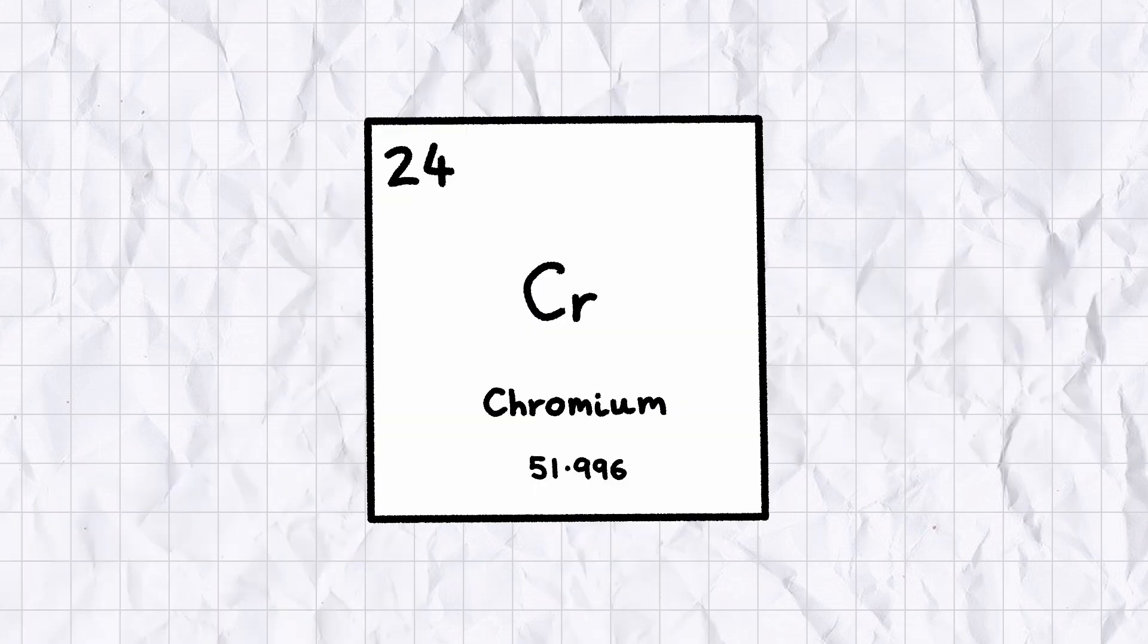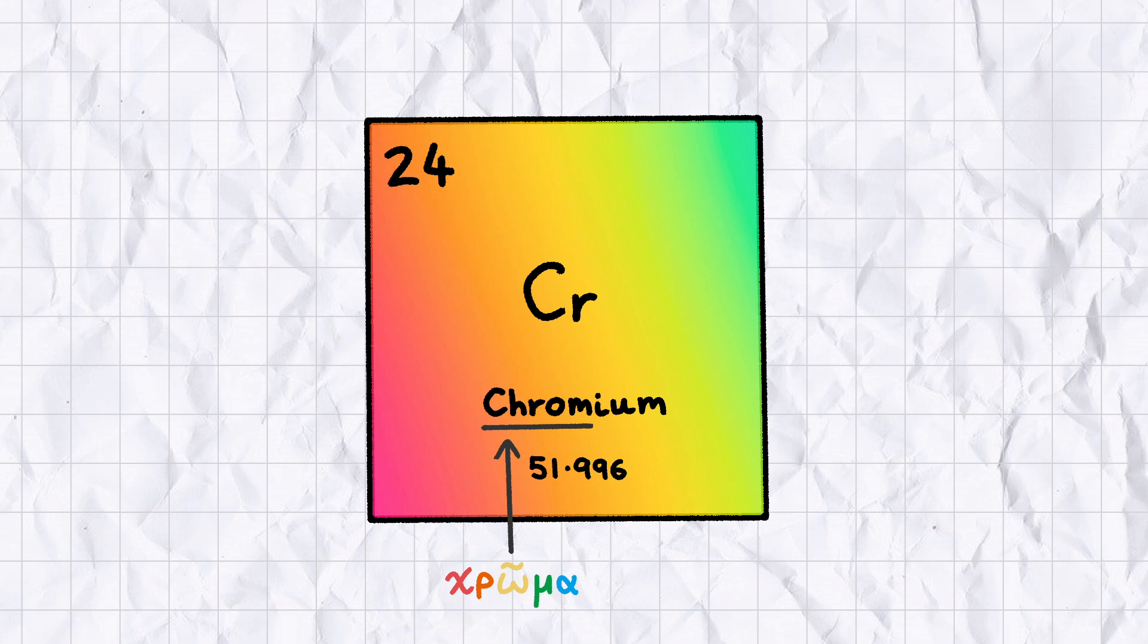Like most of the other transition metals, chromium forms a wide variety of colored salts, hence the Greek word chroma in its name. Chromium can adopt a wide range of oxidation states, but its two most common are plus 3 and plus 6.